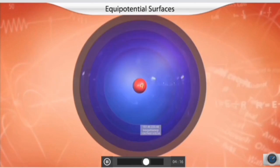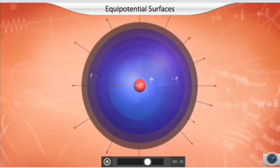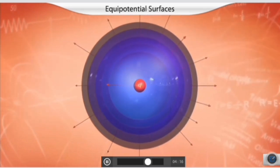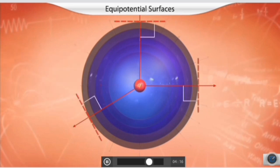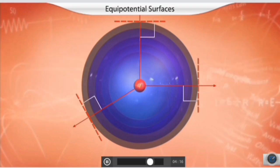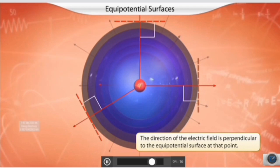In an electric field, the locus of all the points at which the test charge has equal potential is called an equipotential surface. Clearly, no work is done in moving a test charge between two points on an equipotential surface. The equipotential surface at a greater distance from the charge will be a larger hollow sphere, giving several concentric spheres. If we cut these spheres along the central plane, we can observe a 2D representation of these surfaces. Every electric field line intersects an equipotential surface such that the electric field at every point is normal to the equipotential surface passing through that point.